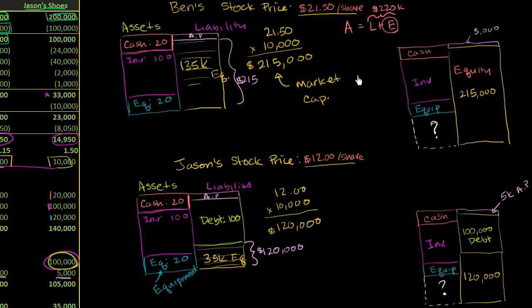Now you might remember from previous videos that the book value of the assets in Ben's company are only $140,000. $20,000 of cash, $100,000 of inventory, and $20,000 of equipment. This is equipment, $20,000 of equipment.